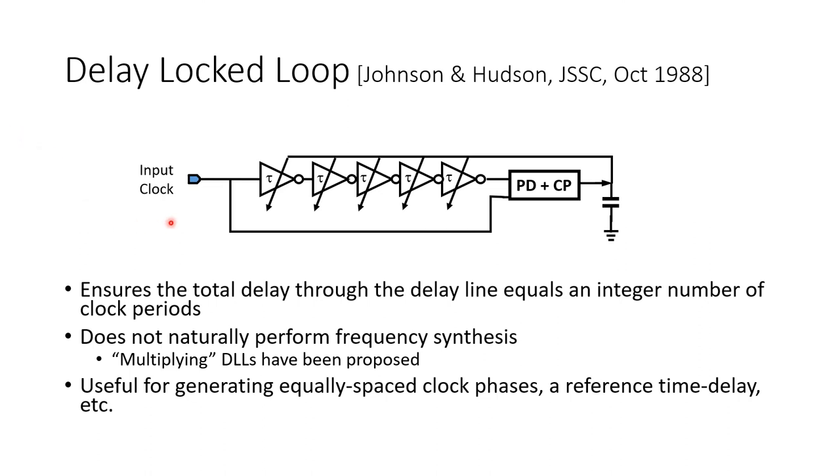Whereas a phase lock loop is trying to adjust the frequency of an oscillator so that its phase precisely matches that of a reference input, in this case a delay lock loop is just adjusting the delay through a path of inverters to match an integer number of periods of an input clock.